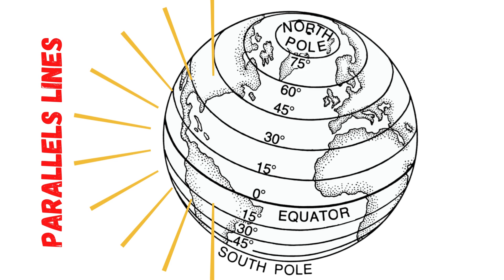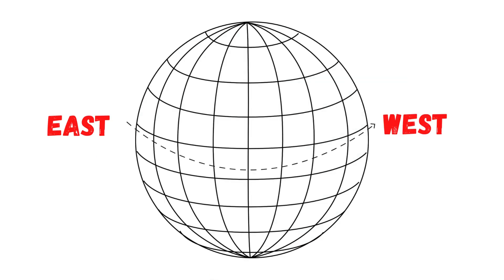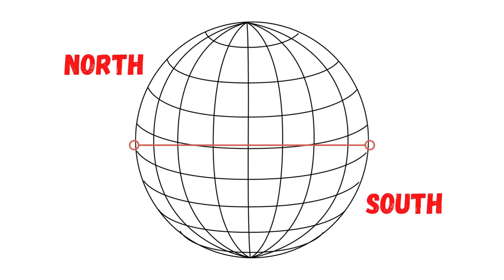Welcome to Top Brain GK. Lines of latitude are known as parallels. As you can see in this image, there are parallel lines on Earth — these are latitudes. A circle of latitude is an imaginary ring linking all points sharing a parallel. All latitudes run east to west but measure your distance north or south.